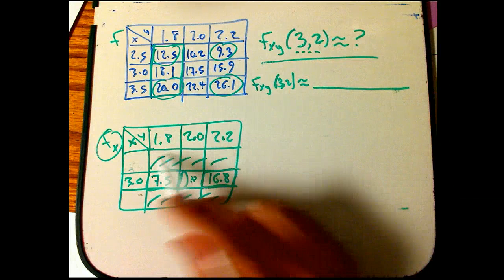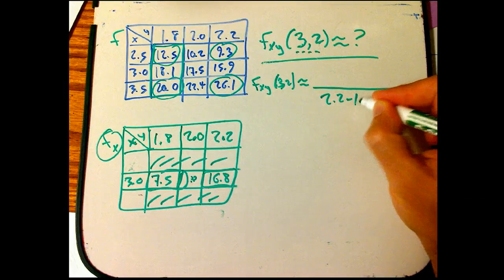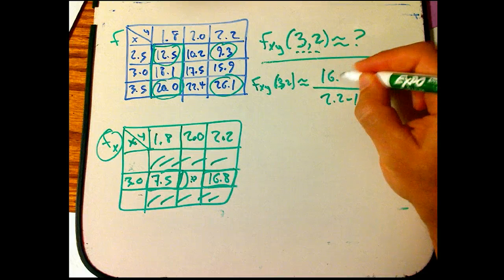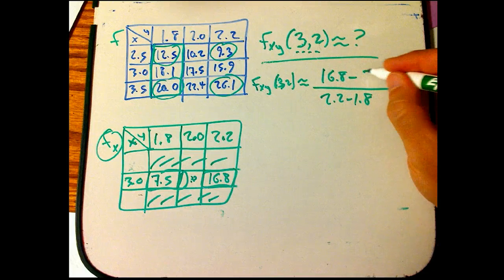Now the y variable is going from 1.8 to 2.2, so I'm going to take 2.2 minus 1.8, and then I'm going to look at the 16.8 minus 7.5.